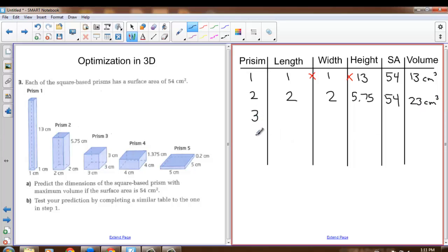Why don't you fill in the rest of the chart for prism 3, 4, and 5, and see if you can identify which of these 5 prisms maximizes the volume.